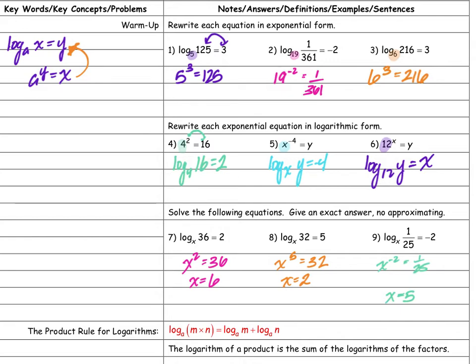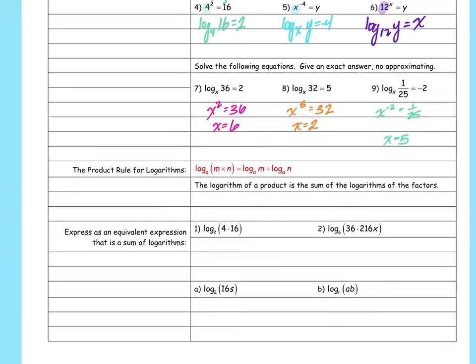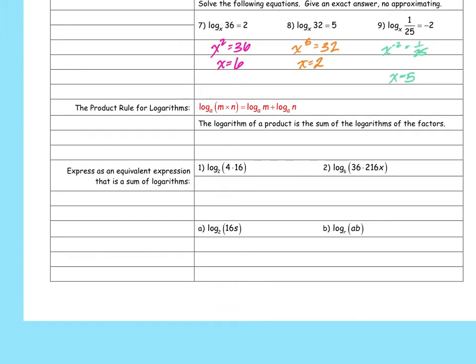Now we're moving on to new material — the rules for logarithms. The first is the product rule for logarithms: if I have log base a of m times n, I can rewrite that as log base a of m plus log base a of n.